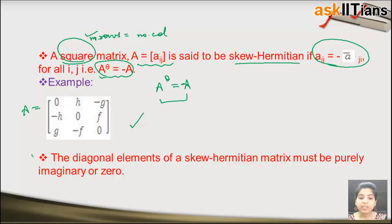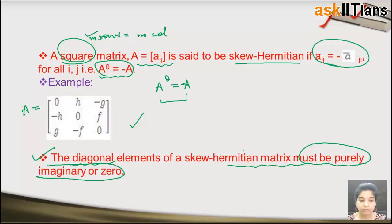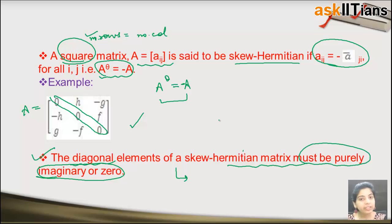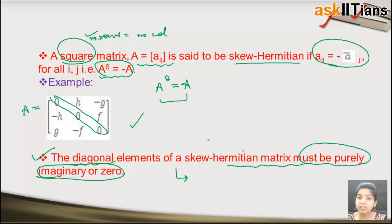An important property: the diagonal elements of a skew Hermitian matrix must be either purely imaginary or zero. If the diagonal elements are neither purely imaginary nor zero, you can directly say — without any calculation — that the matrix cannot be skew Hermitian. The diagonal elements are extremely important; they help you decide the nature of a matrix.